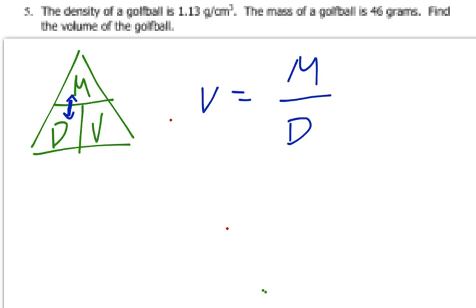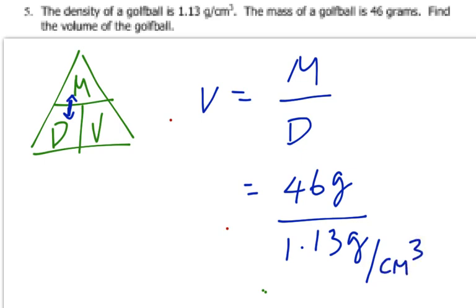My mass is 46 grams. So that's going to be equal to 46 grams divided by 1.13 grams per centimeters cubed. And you analyze what happens. The grams and the grams cancel, top and bottom. This centimeters cubed flips up, giving you a unit of volume, which makes sense because we're looking for volume.